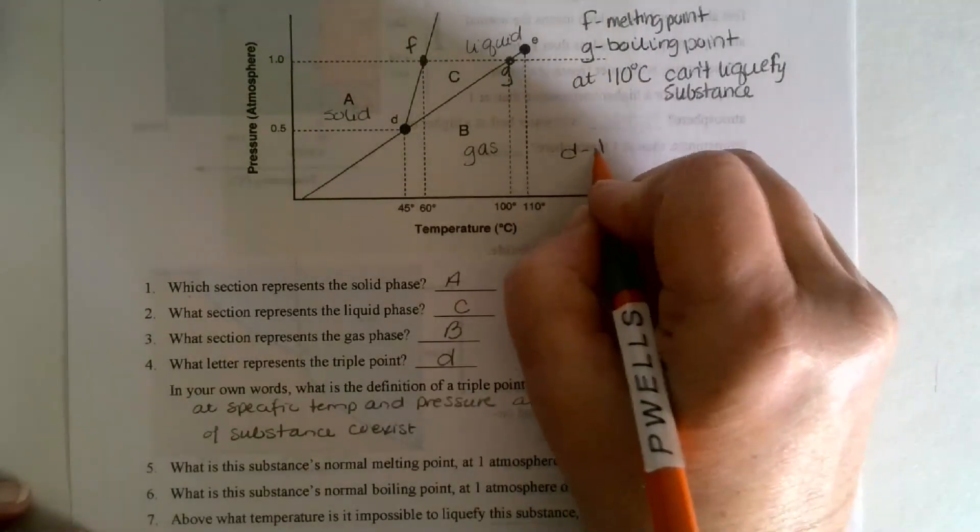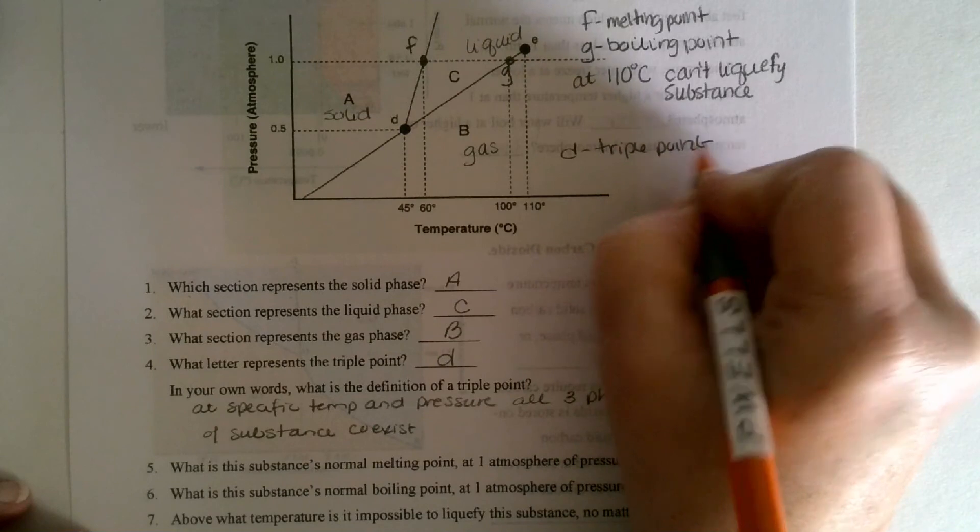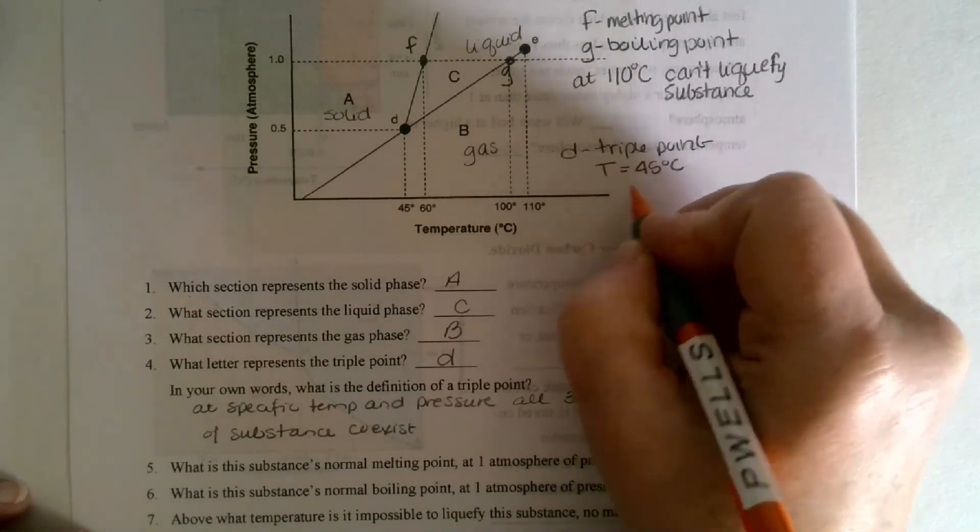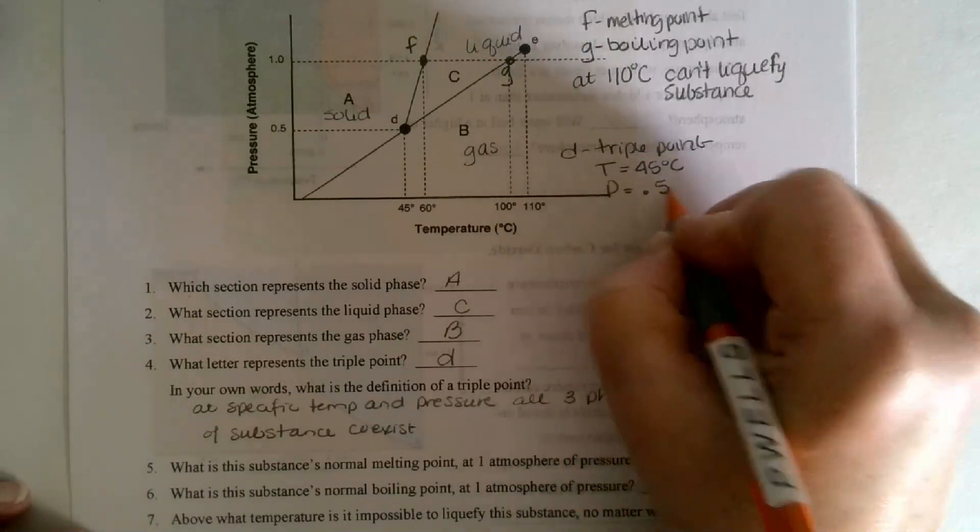the temperature is 45 degrees Celsius, and the pressure is 0.5 atmospheres.